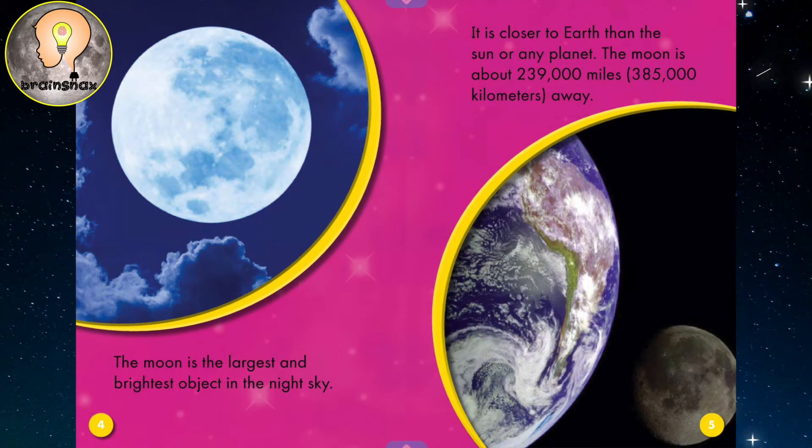The moon is the largest and brightest object in the night sky. It is closer to Earth than the sun or any planet. The moon is only about 239,000 miles, or 385,000 kilometers away. So it's actually considered pretty close to the Earth.